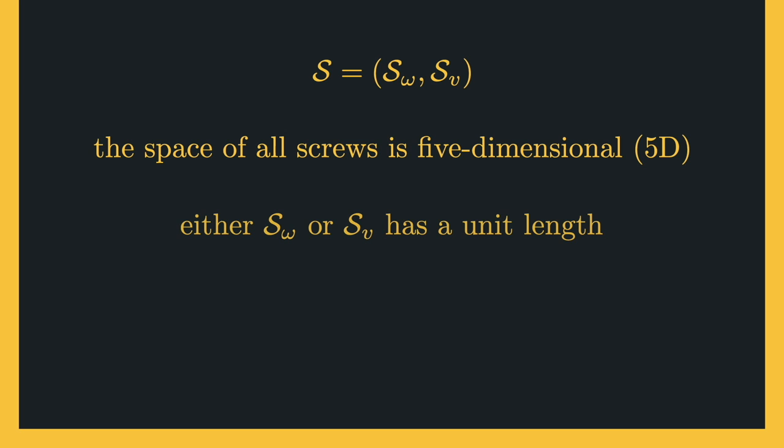Note that six numbers are needed to represent the screw axis, but the space of all screws is five-dimensional. This is because either the angular component or the linear component has unit length. If both the angular and linear components of the screw axis are non-zero — meaning we have rotational motion — then the screw is defined so that the norm of the angular component is 1. Now let's see how we can define the matrix representation of the screw axis.